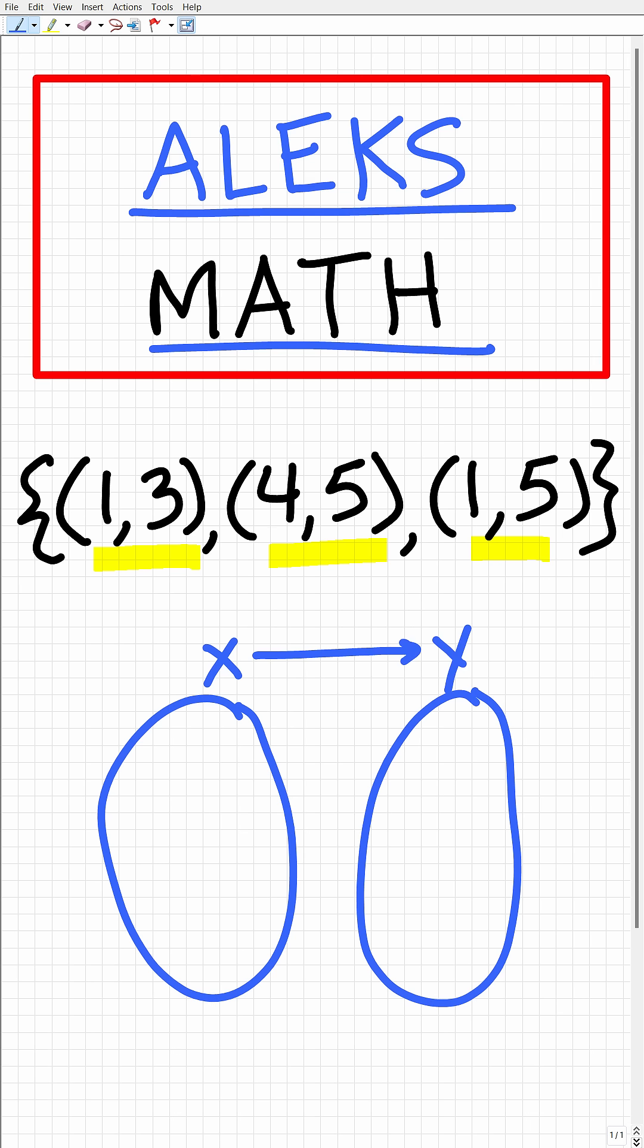Remember, X maps to Y. So when we're looking at an ordered pair, an XY ordered pair, the X variable is the independent variable. This represents the domain of a function. And the Y variable represents the dependent variable. And this represents the range.